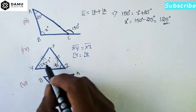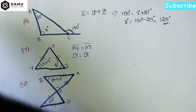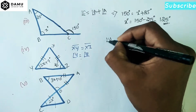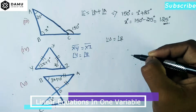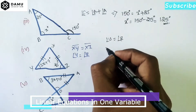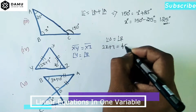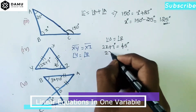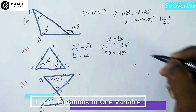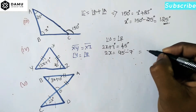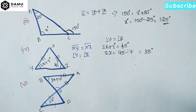So angle Y will be equal to angle Z. We write: angle Y equals 2X plus 7, and angle Z equals 45 degrees. Setting them equal: 2X plus 7 equals 45, so 2X equals 45 minus 7, which is 38 degrees.